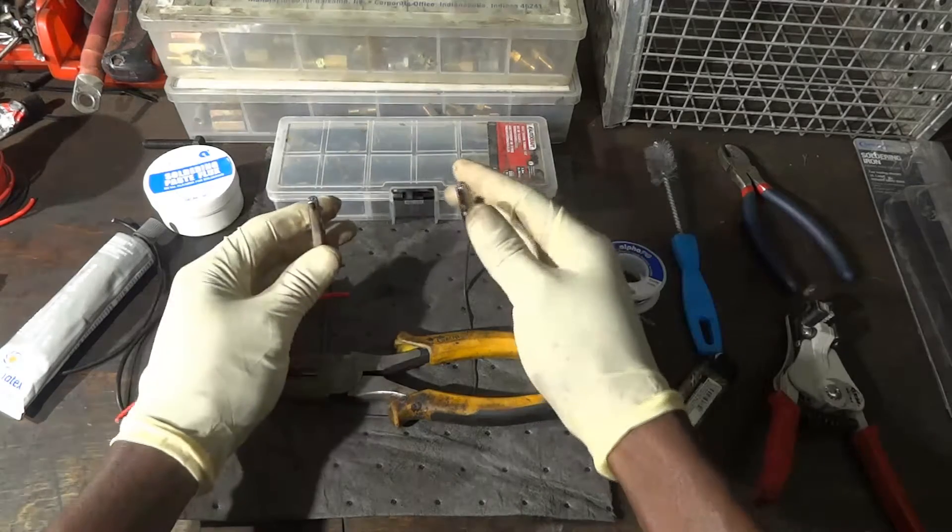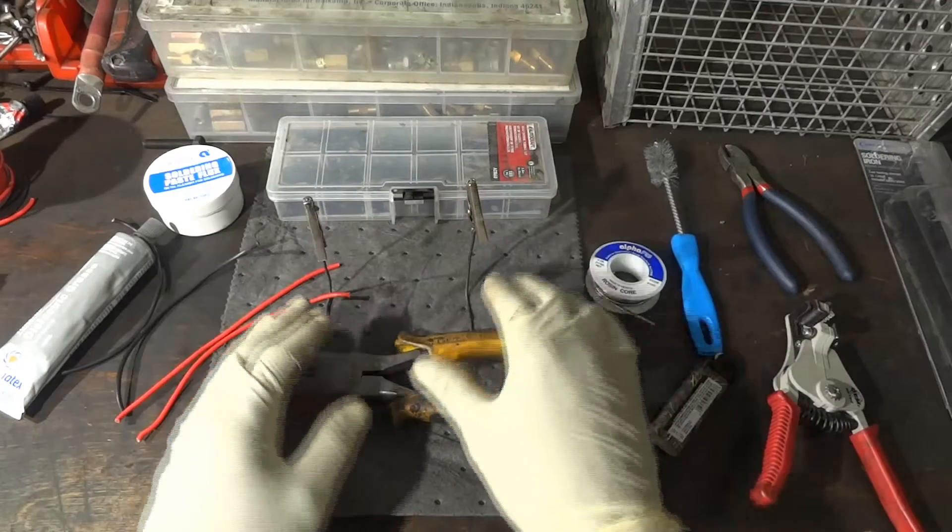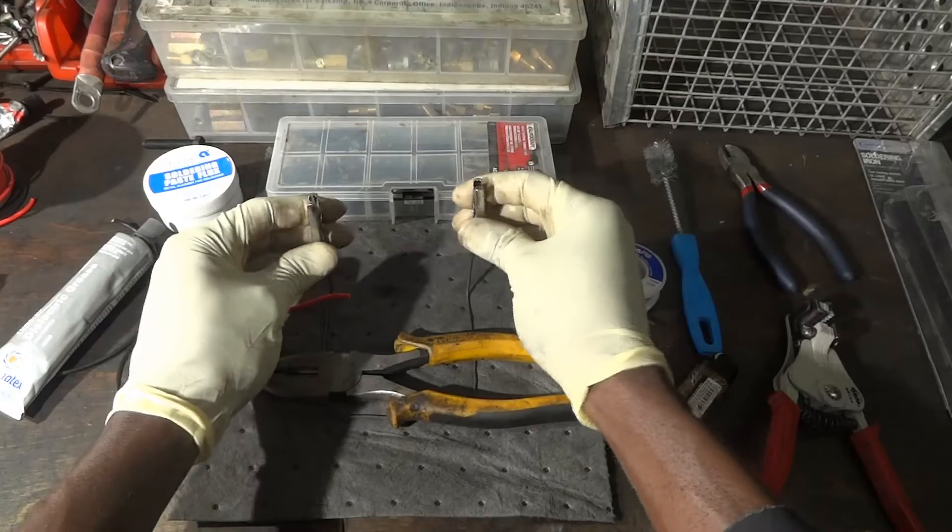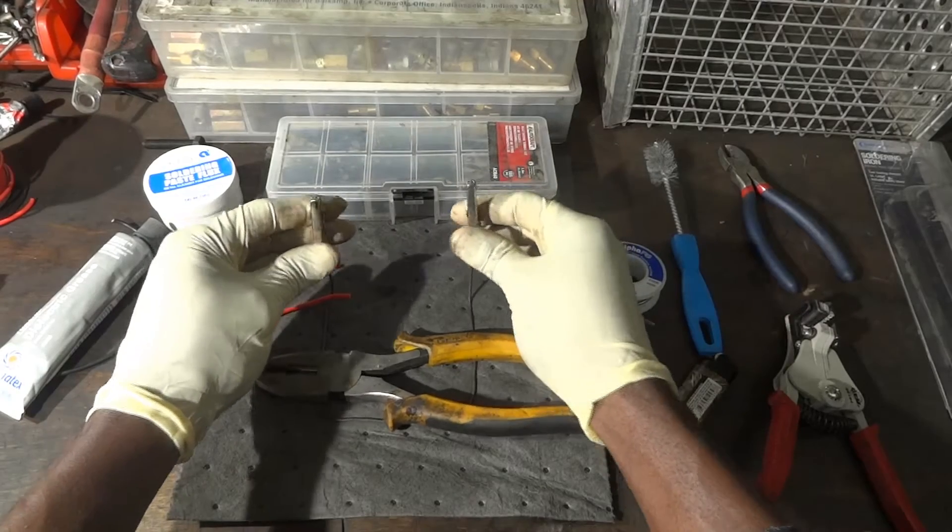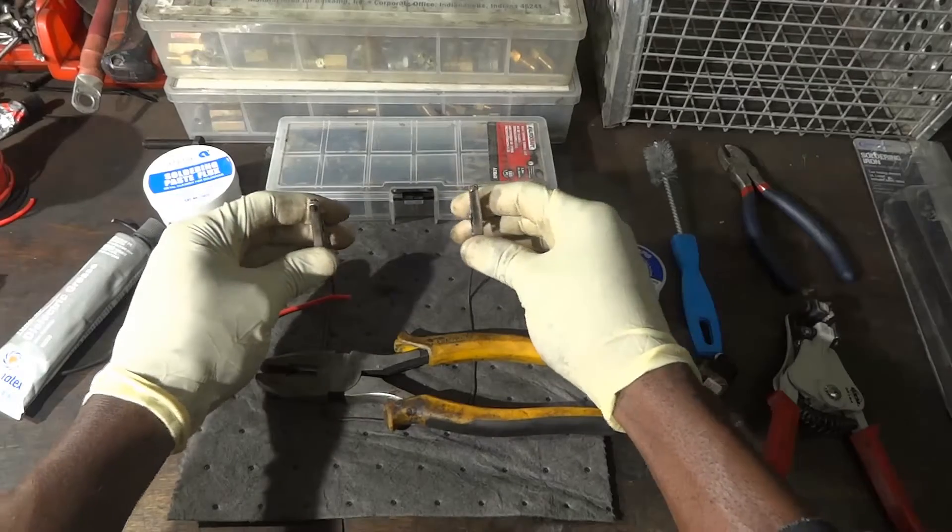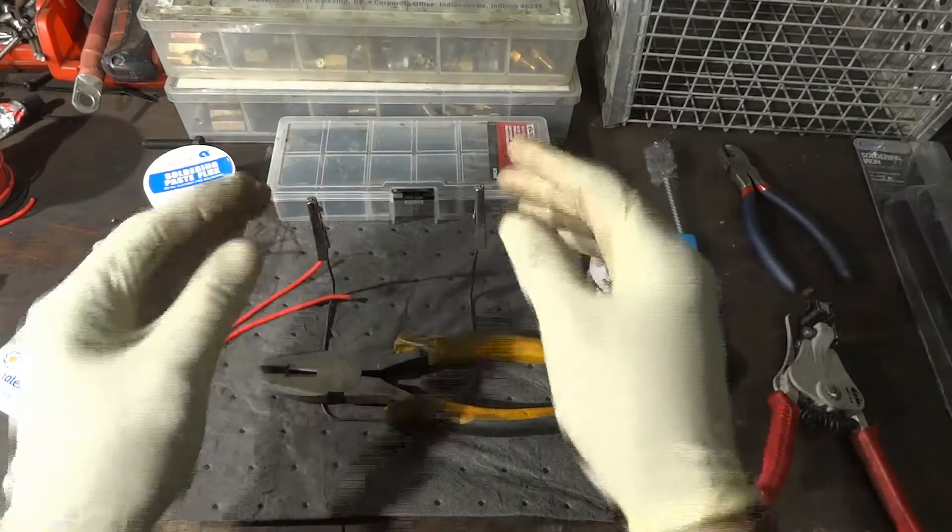I have a tool here that I made. Some people call it helping hands. I made it with two alligator clamps and a mechanical wire. So this is going to help us hold our wire down as we are soldering.